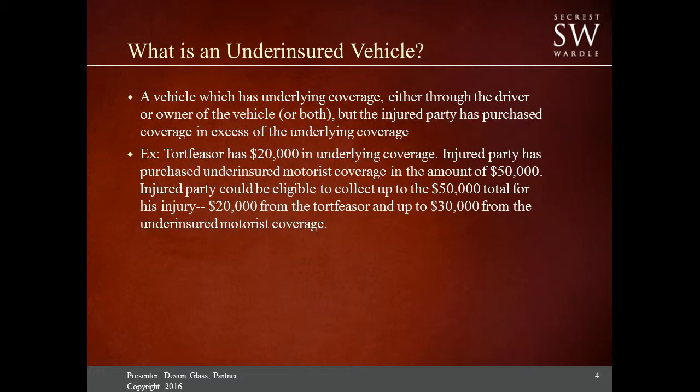It's up to the maximum when you total up every potential underlying policy to determine the full value. So if they had $20,000 underlying and $100,000 underinsured coverage, that would be a potential of $80,000. If there are two $20,000 underlying policies, that would be $40,000 from the tortfeasor and the other policy, and then an additional $60,000 from the underinsured coverage.